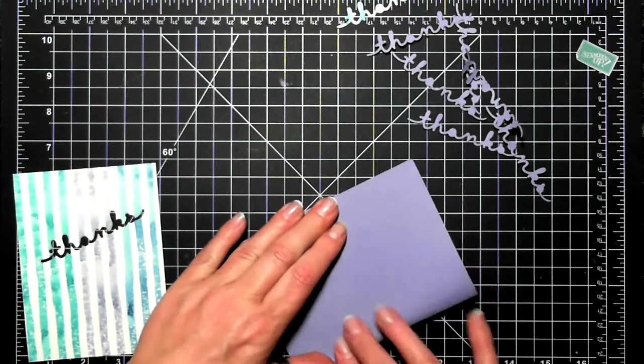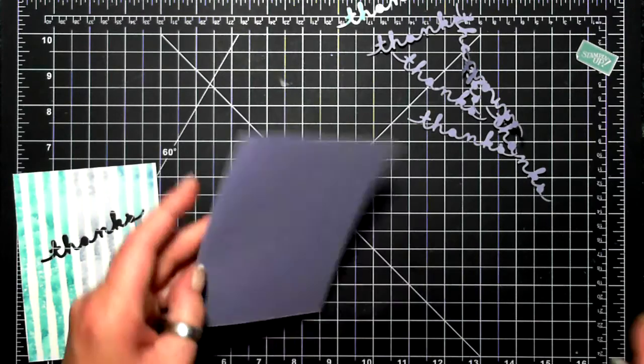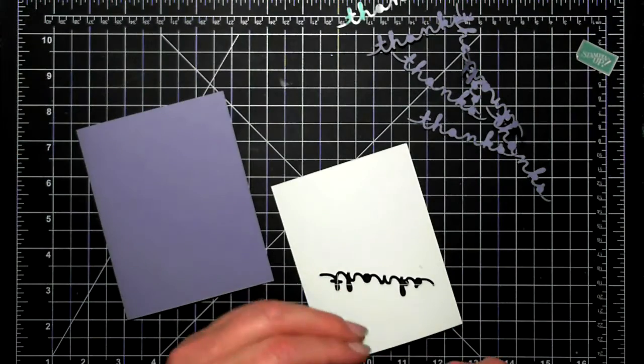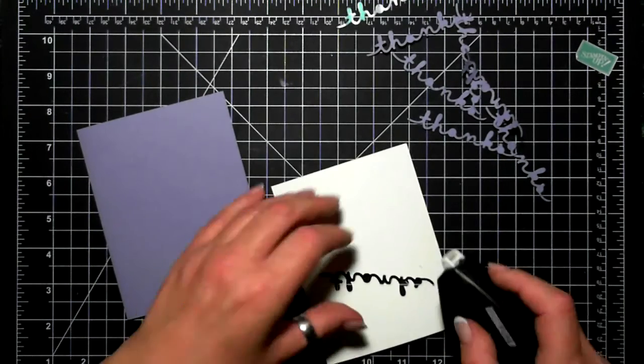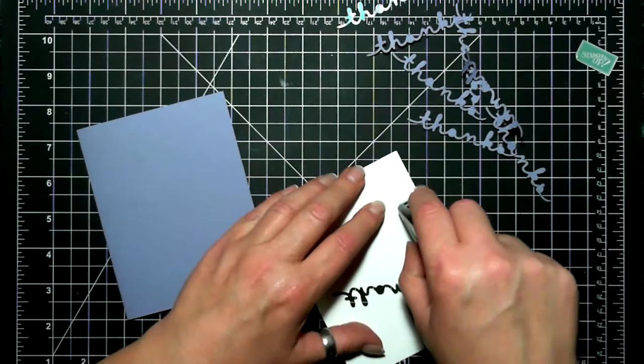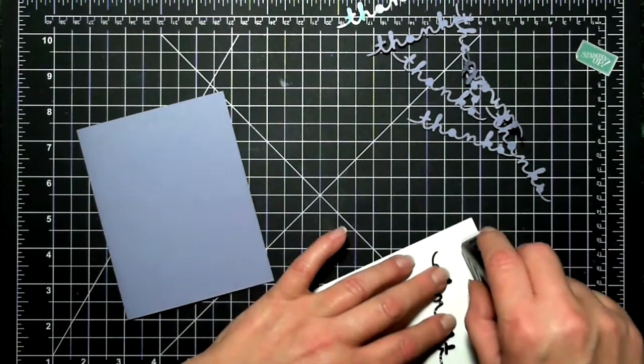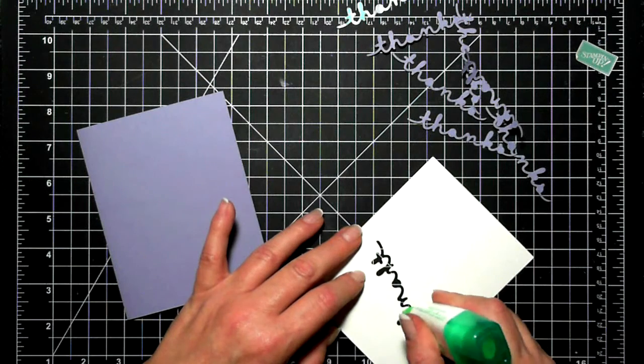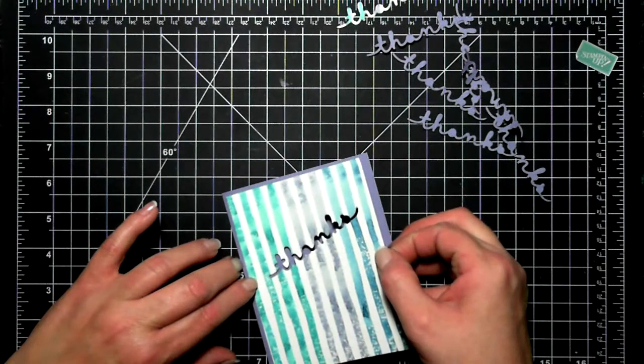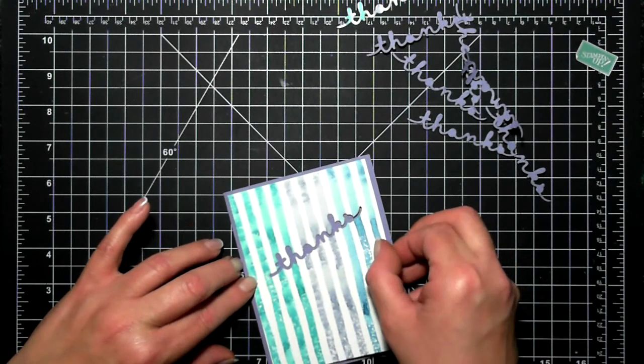I'm adhering the watercolor piece with Fast Fuse. I could have used Tombow here or any kind of liquid glue—Fast Fuse to me was working for me today, so I decided to go ahead and use it. In some of the small parts, the intricate parts of the thanks, I did dot a little bit of the Tombow just to put that to the card base.